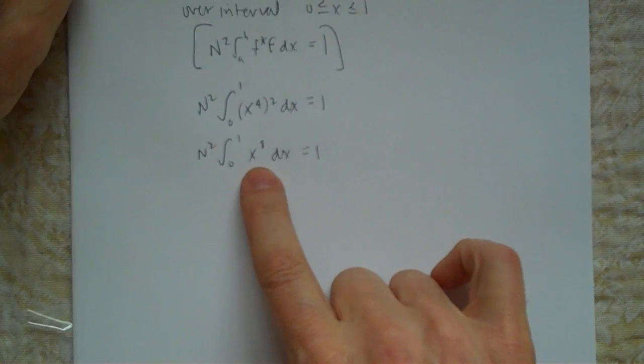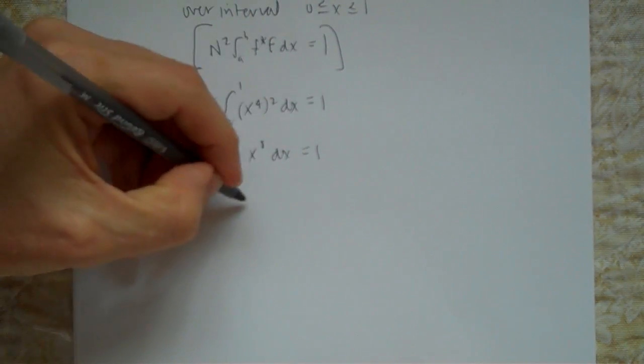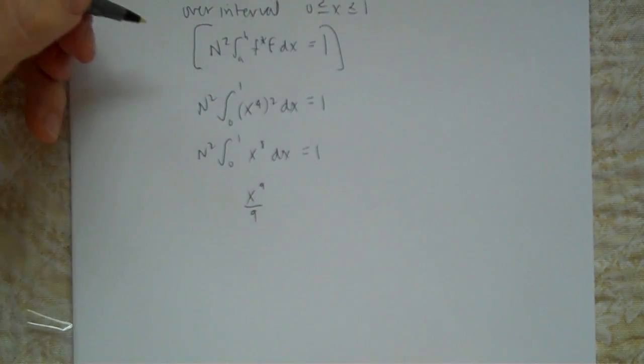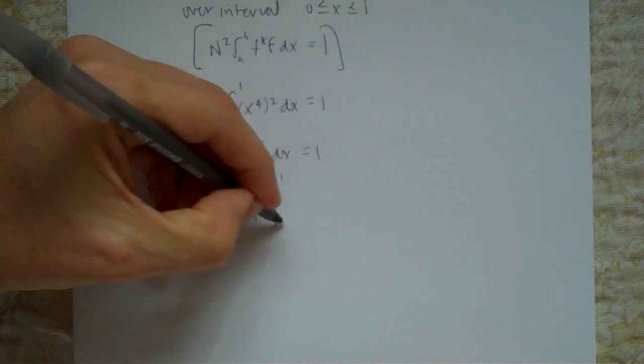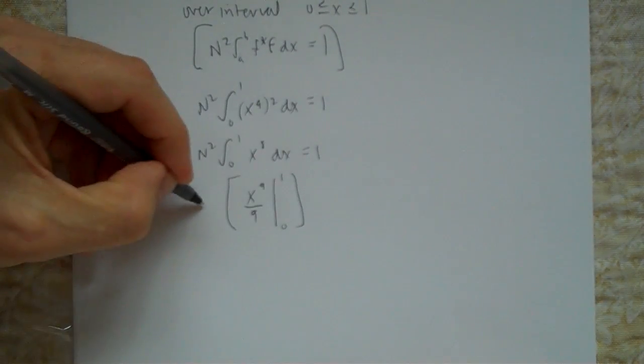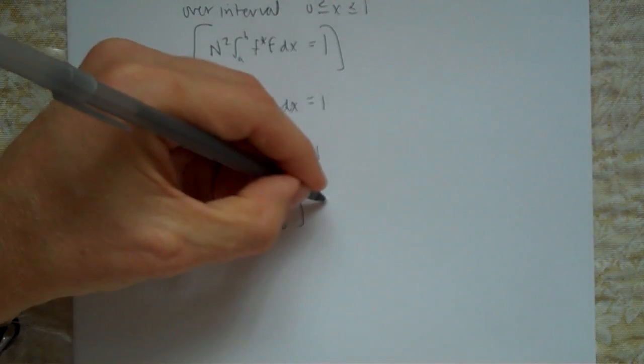We know that if that's to the eighth, its anti-derivative is going to be to the ninth. So this must be n squared times x to the ninth over 9, evaluated from 0 to 1, equals 1.